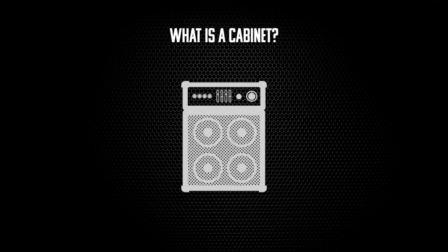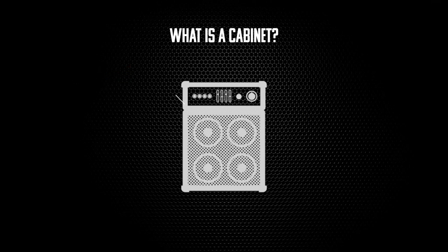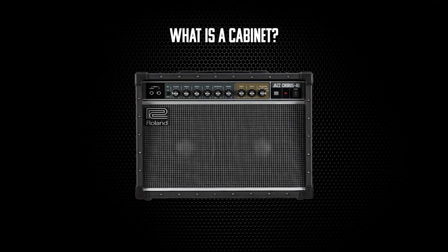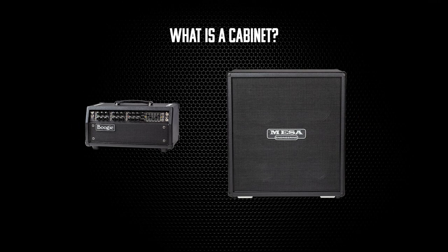A cab is basically a set of speakers, or a housing of a set of speakers, that is usually accompanied with an amp. An amp on its own doesn't really sound like anything you'll hear from a preset or an actual amp and cab setup, so you definitely need a set of speakers to get the output of the amp. Some amps have the speakers built into them, like some Fender amps or Roland amps, but with premium amps like Mesa Boogie or Marshall, the amp head looks like a slim box and there's a bigger box underneath which has really fancy speakers — that is what is called the cab.